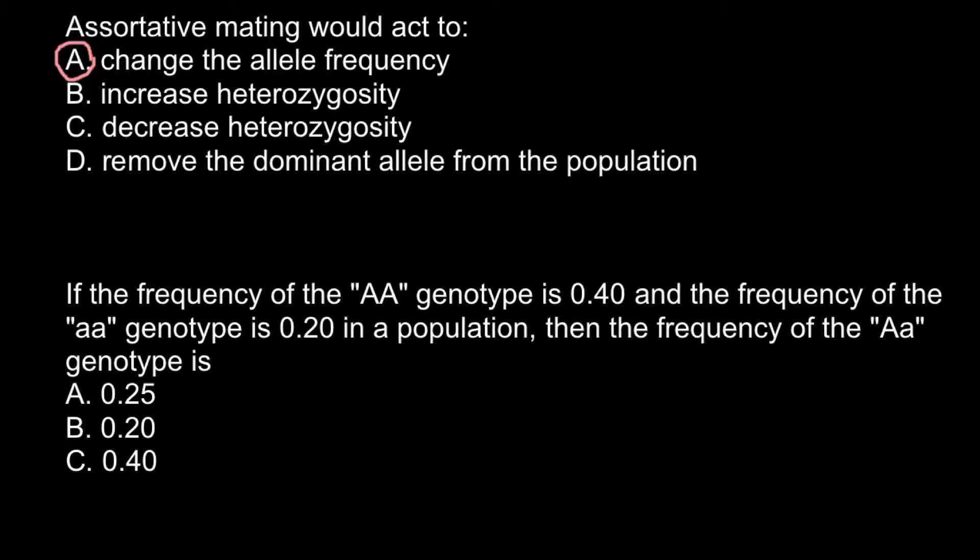The frequency of the homozygous dominant genotype is 0.40 and the frequency of the homozygous recessive genotype is 0.20 in a population. Then the frequency of the heterozygous genotype is... And here are three answers that you may choose from. And if you don't know how to answer this question,